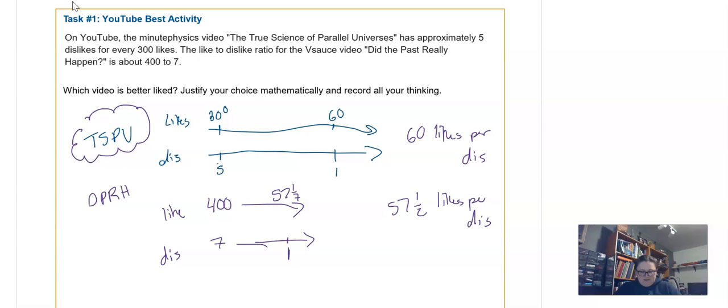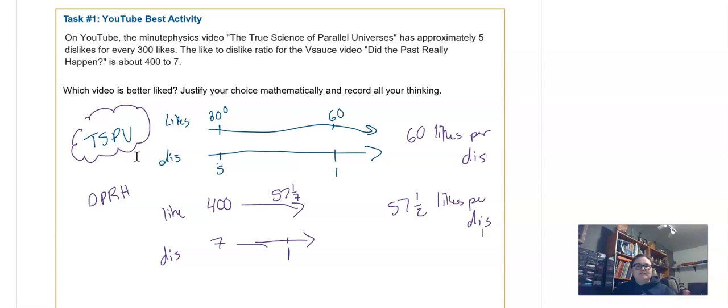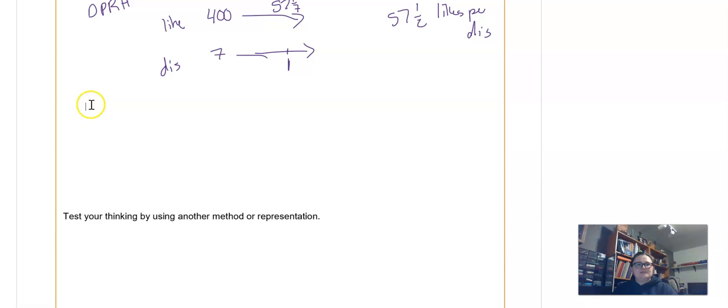It has more likes for every dislike. So this is 60 likes per dislike, this is 57 and 1 7th likes per dislike. And you might have gotten divided by 7, 57.142857, so I've got 57.14, that's basically the same number. So another way that you might compare these would be to do it the other way. Some people might actually be inclined to do dislikes divided by likes, but then you just have to remember that the bigger number is more disliked and therefore worse liked. And you might not go straight for the number line, maybe you just start it by dividing, just find that rate, do 300 divided by 5, and 400 divided by 7. Either way you're going to end up with these same numbers. So the True Science of Parallel Universes appears to be liked more.